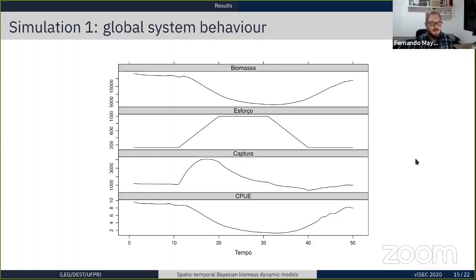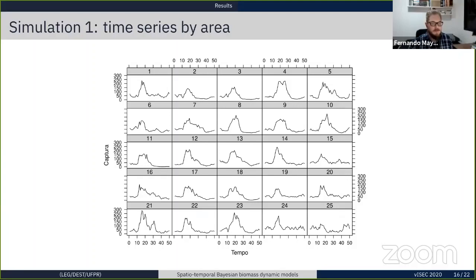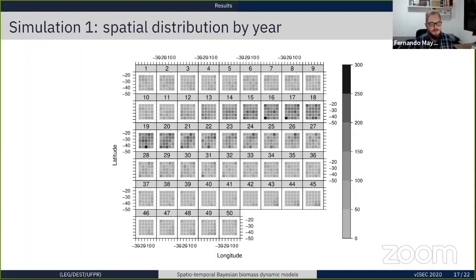If we look a little bit closer, this is the time series for each of the 25 areas. We clearly see that areas near to each other have similar trends over time. And if we look the other way, the spatial distribution over the years, we also see similar trends over time and between closest areas.